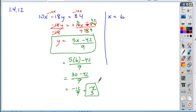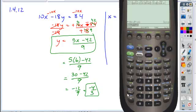We could also do this on our calculators. If we used our calculators to solve this, we could access the F2 Algebra tab, choose Solve, type the equation exactly as it appears: 10x minus 18y equals 84. Comma y tells the calculator that you're looking to solve for that. And when you do, you are confirmed: 5x minus 42 over 9 is the simplified form.